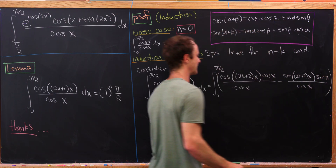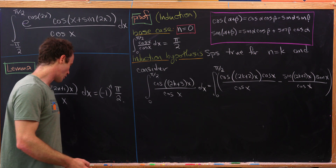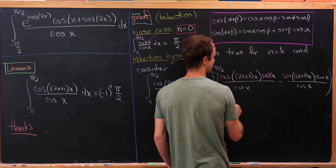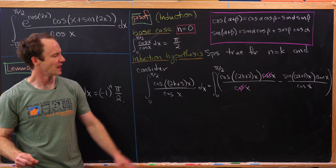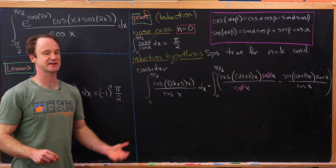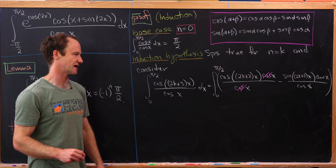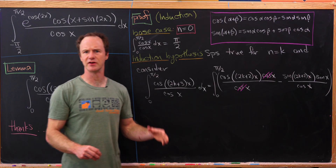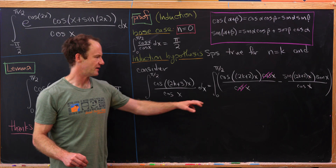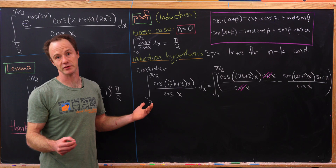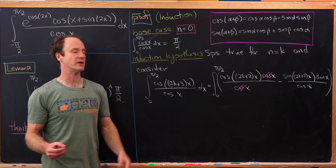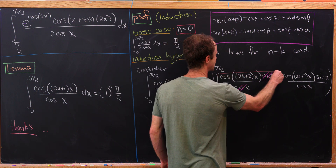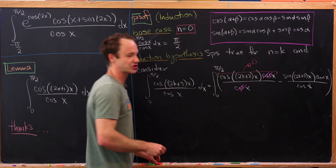We can do some quick simplification: the cosine of x in the numerator cancels with the cosine in the denominator. Taking the antiderivative of cosine gives us sine, and since plugging in pi over 2 gives sine of an integer times pi — which is 0 in both cases — this portion of the integral contributes nothing and equals 0.